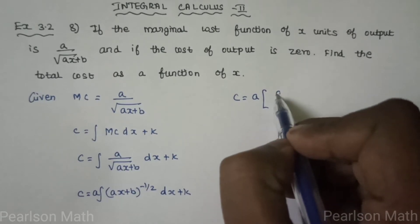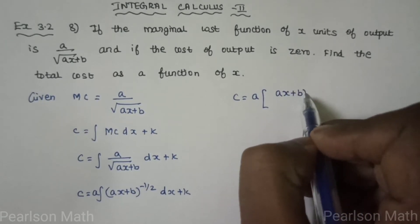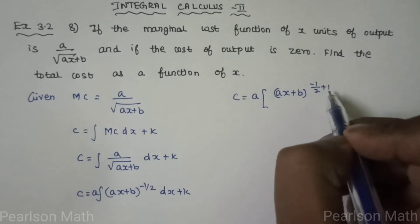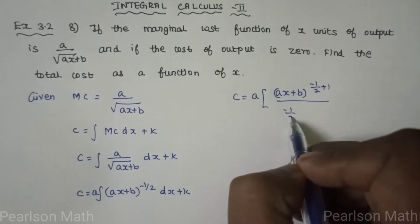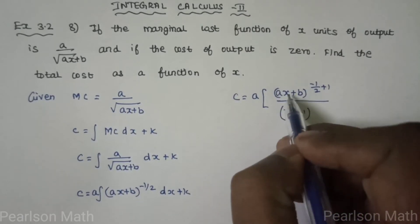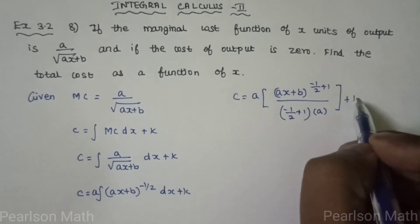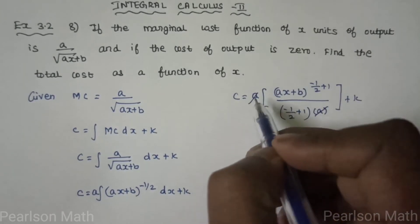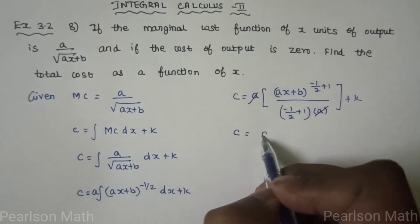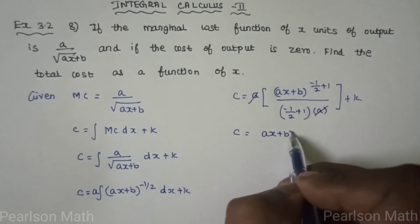If we integrate, C equals a into x power n. Integrate x power n plus 1 by n plus 1. So minus 1 by 2 plus 1 into ax. Differentiate so a, plus k. Now a cancels. C equals (ax plus b) whole power 1 minus 1 by 2.